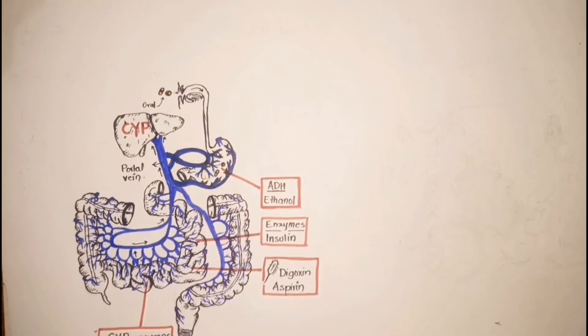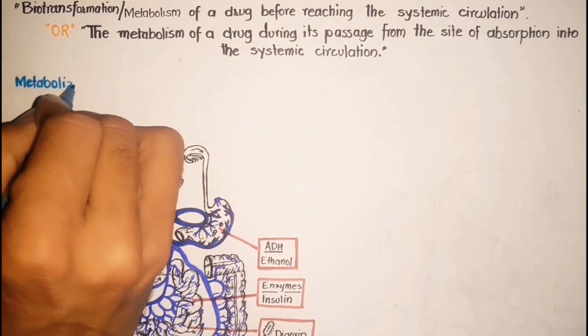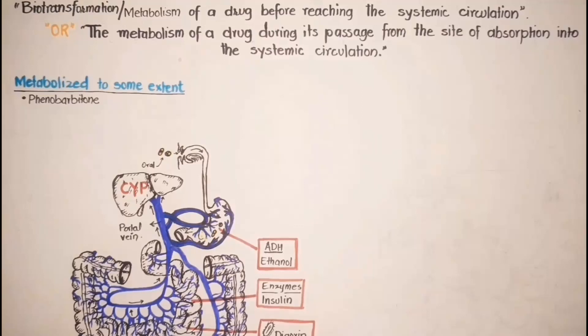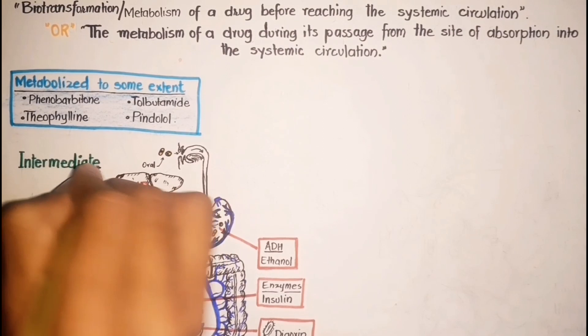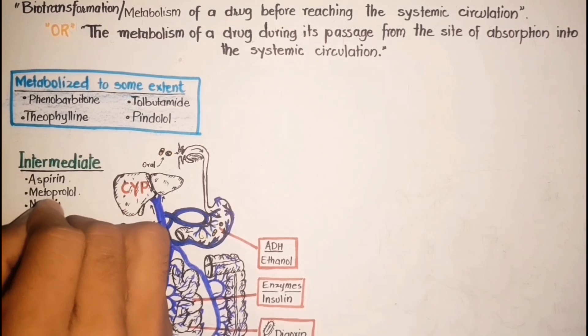Drugs that are metabolized to some extent include phenobarbitone, tolbutamide, theophylline, and propranolol. While drugs that are intermediately metabolized include aspirin, metoprolol, nortriptyline, and pentazocine.